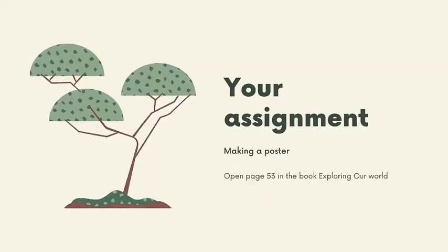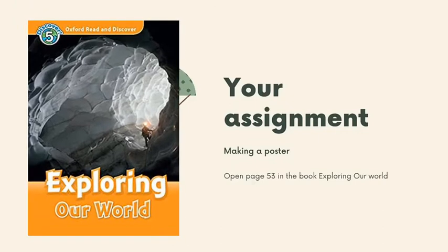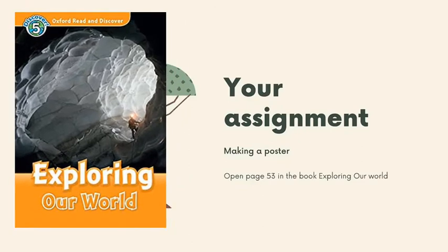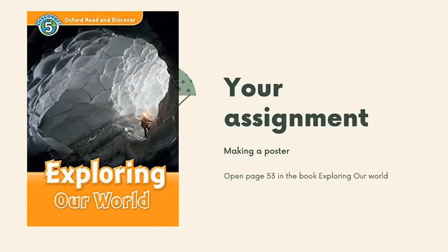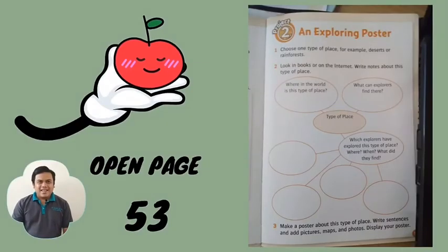It's time for your assignment, everybody. What you have to do is make a poster about one of the chapters in the book 'Exploring Our World.' Please open page 53 — you will find instructions on how to make an exploding poster. You have to choose one type of place, for example the desert or rainforest, then look in books — not on the internet — and write notes about this type of place. You can read the instructions clearly on page 53.